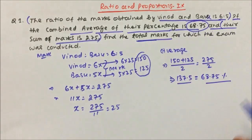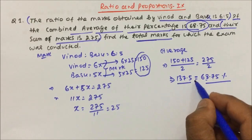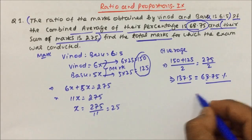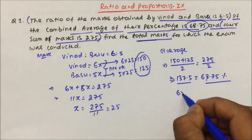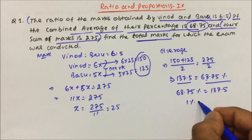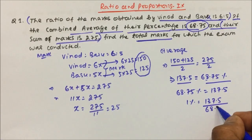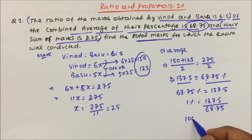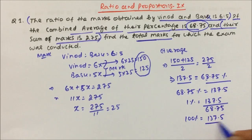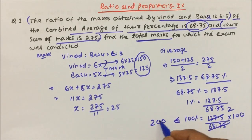You have to find out the total marks. So 68.75 percentage is equal to 137.5 — then what is 100%? So 1 percentage will be 137.5 divided by 68.75, and 100% will be 137.5 divided by 68.75 into 100. This simplifies and the total marks will become 200.